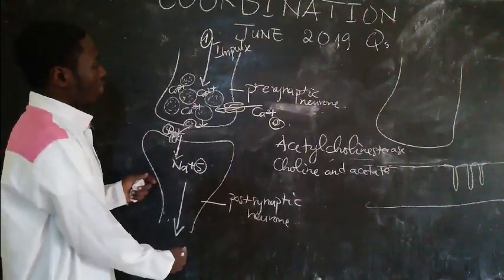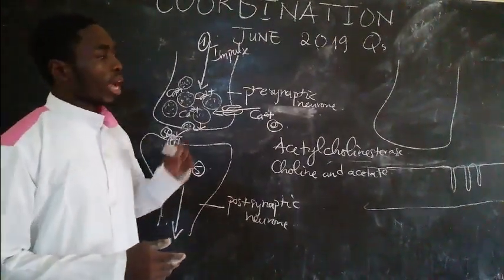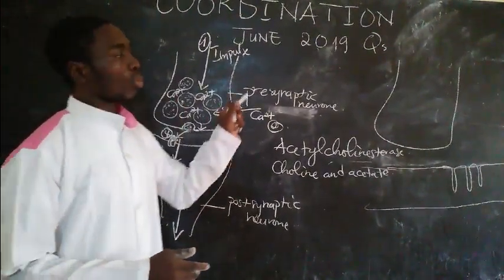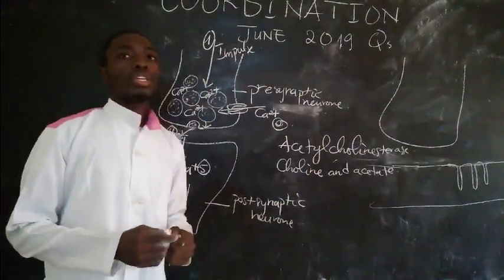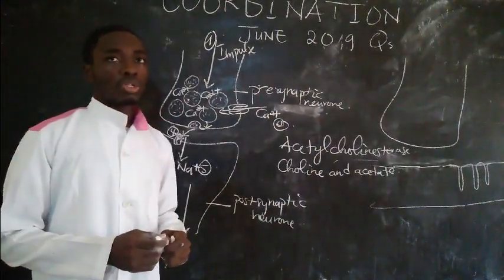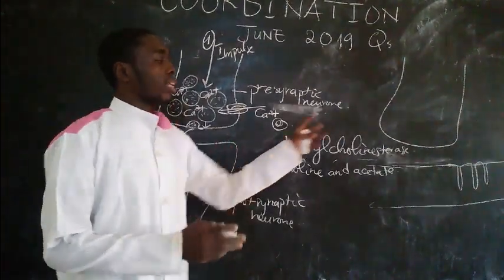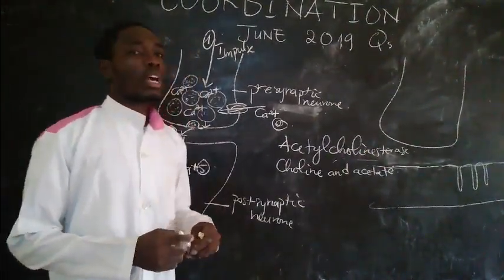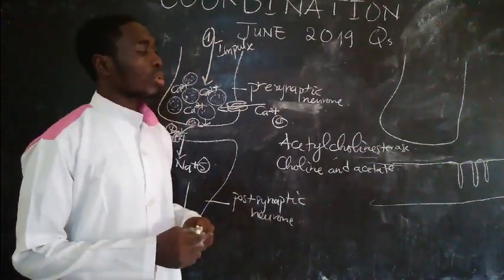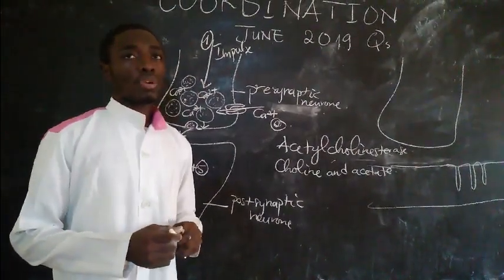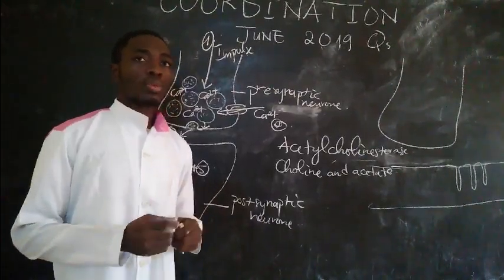In the next video, I will explain how the nerve impulse is transmitted across a neuromuscular junction. The process is very similar, but there are some interesting differences. Thank you very much, see you in the next video.